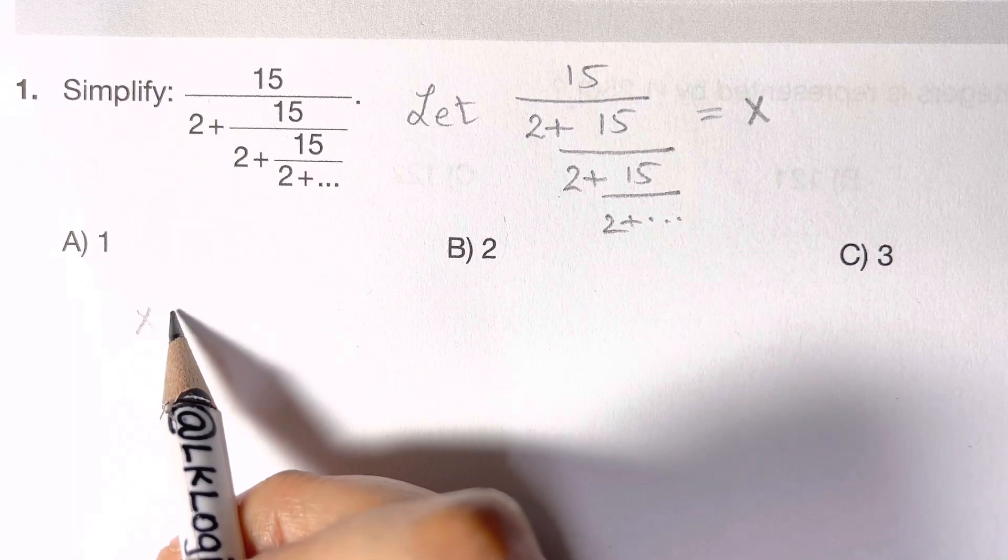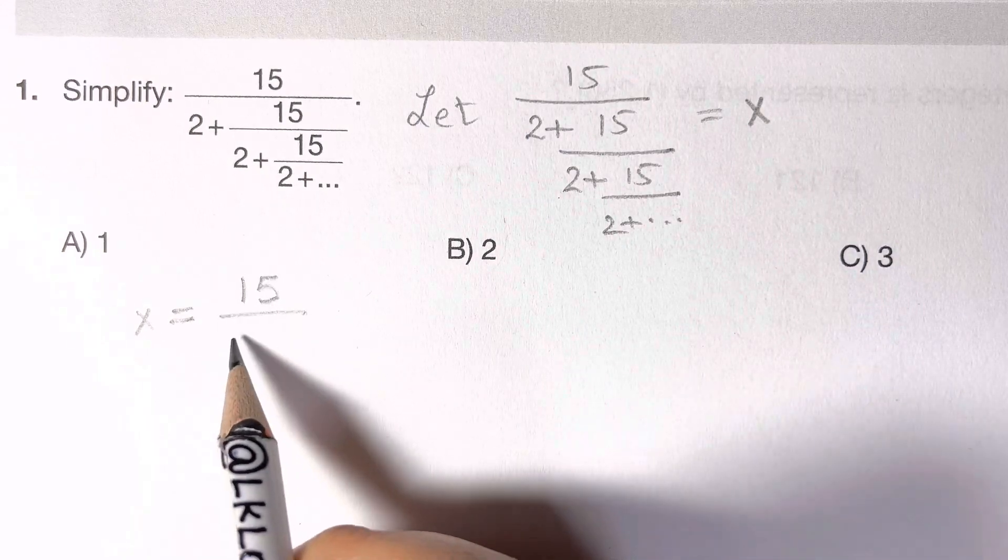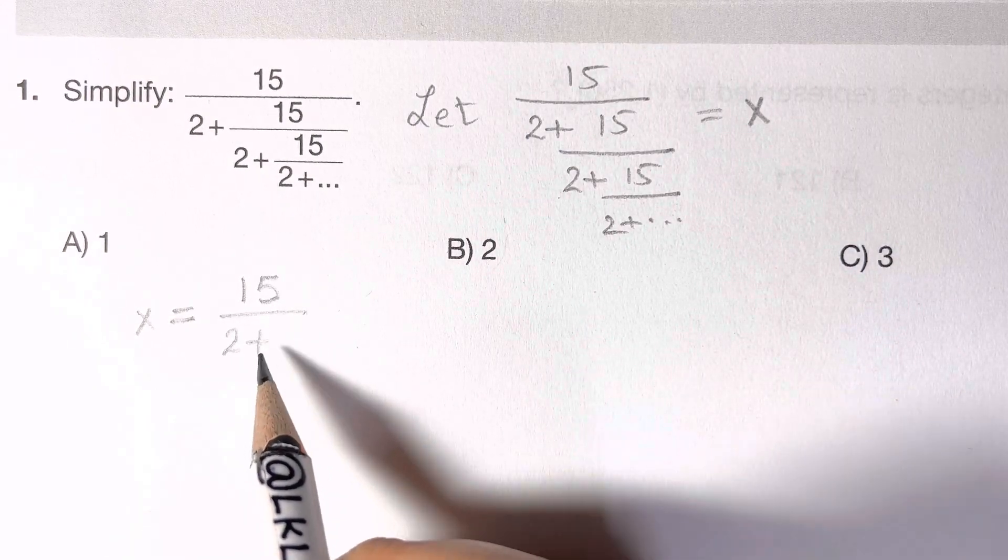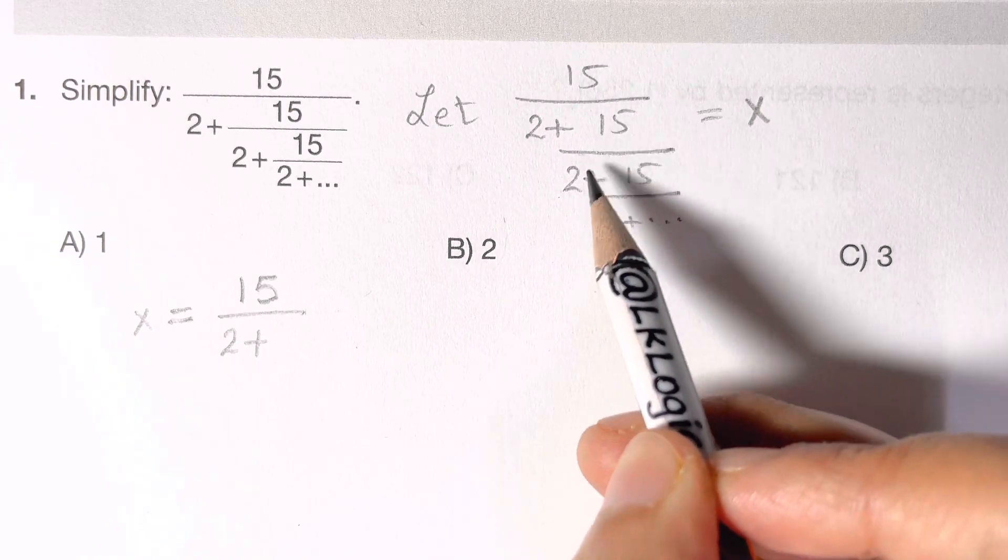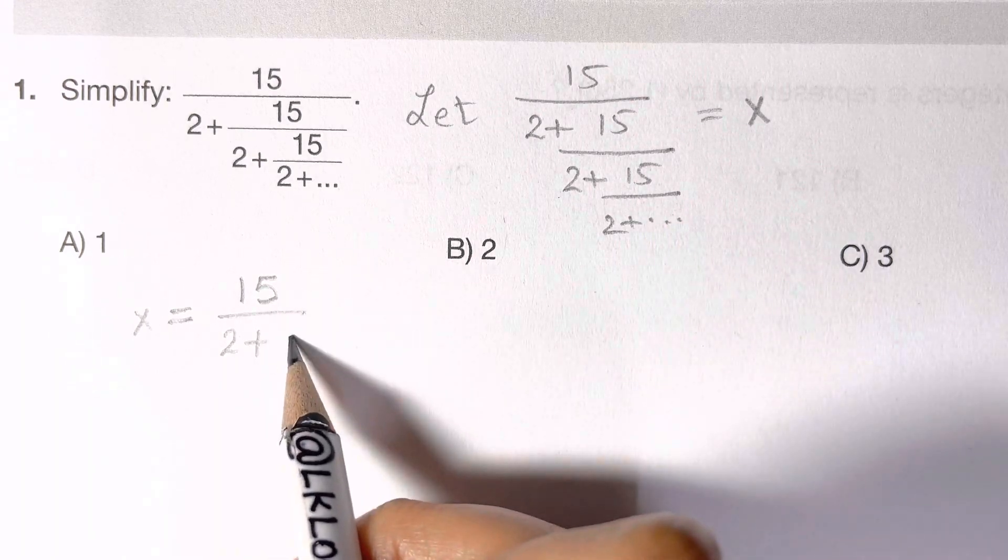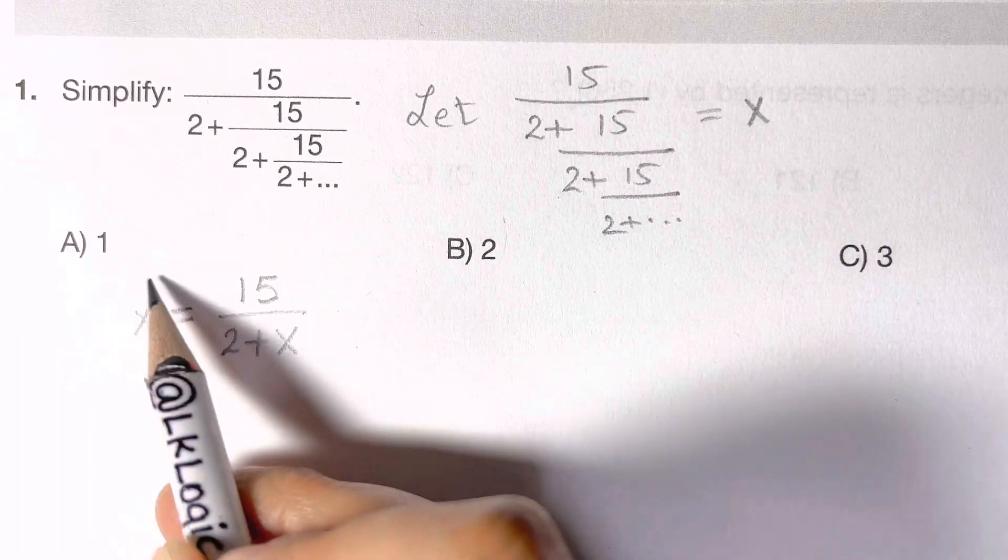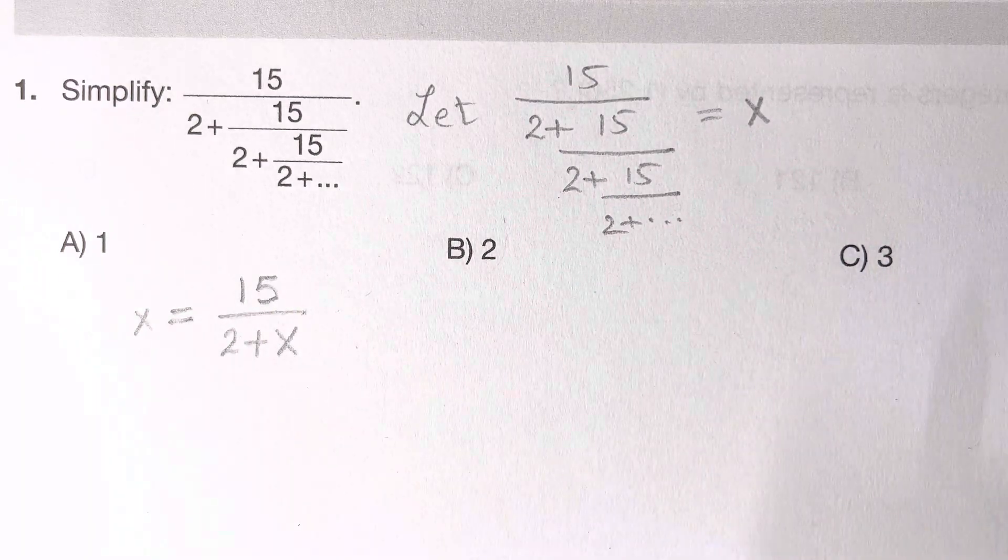From this you can see that x is equal to 15 over 2 plus, see you're having again the recurring thing, 15 over 2 plus 15 over 2 plus and so on. So that's equal to x. What we have assumed: x is equal to 15 over 2 plus x.